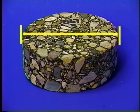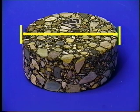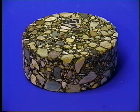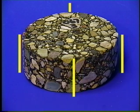To measure the diameter of the sample, measure two points that are at 180 degrees to each other. To measure the thickness of a sample, measure four points that are 90 degrees apart and calculate the average of those points.